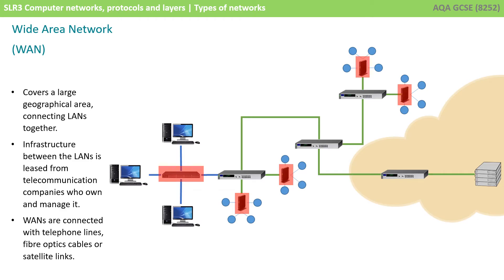Computers in a local area network are connected with a switch, which is shown here in red. Computers in wide area networks are connected with a router, shown here in green.